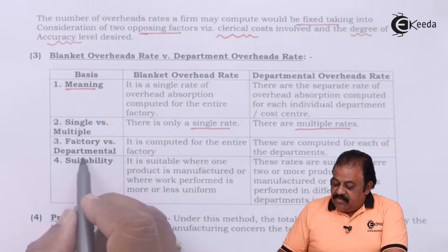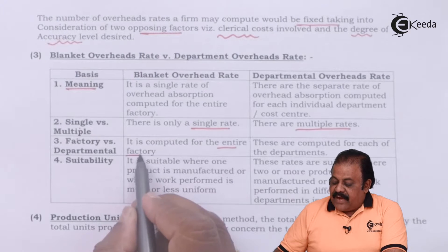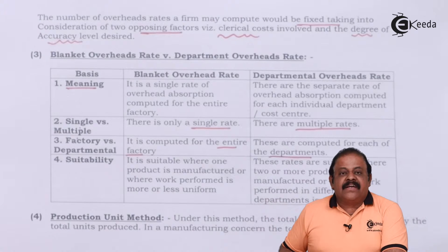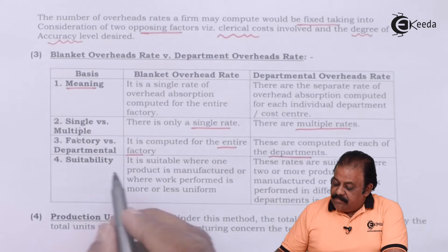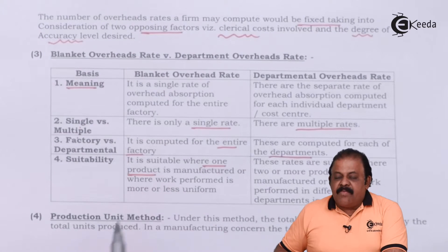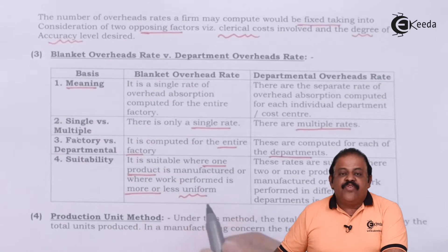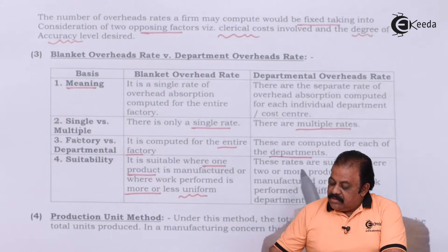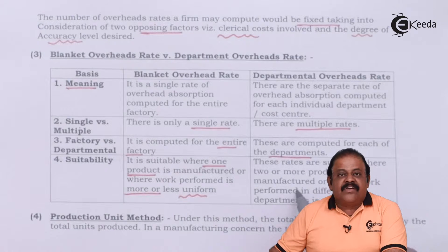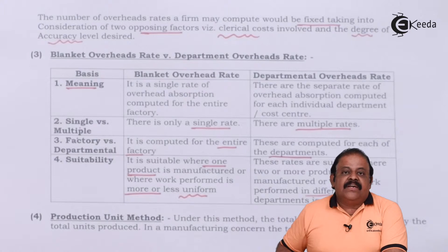The blanket rate is computed for the entire factory, whereas the departmental rate is computed for each department separately. In terms of suitability, blanket rates are suitable where one product is manufactured or where work performed is more or less of a uniform nature. Departmental rates are suitable where two or more products are manufactured or where work performed in different departments is different.